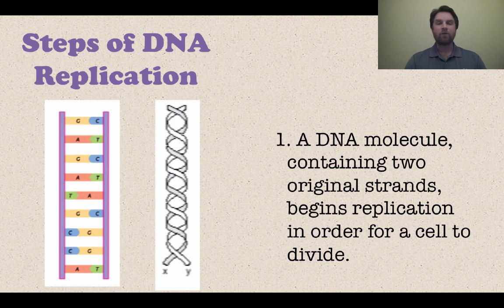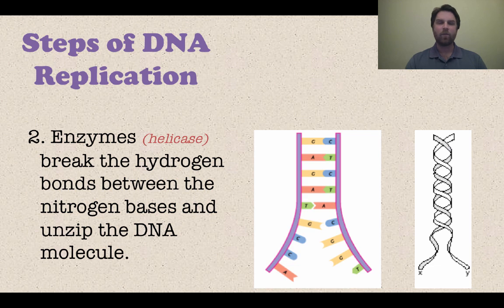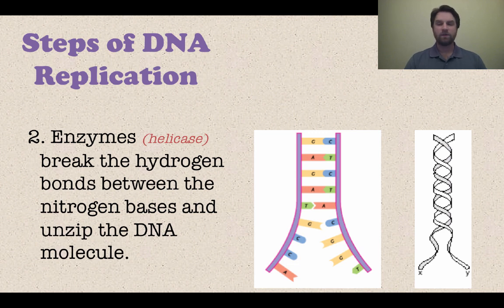So how do we replicate it? We need a couple of different enzymes to help us out. An enzyme like helicase is going to unzip the DNA molecule. We have those nucleotides held together by hydrogen bonds, and helicase is going to break those hydrogen bonds between the bases, and therefore we unzip and have two different strands from the original, as you can see in the picture.